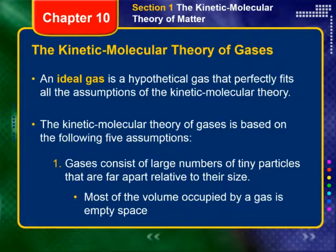The kinetic molecular theory of gases is based on five assumptions. An ideal gas is a hypothetical gas that doesn't exist in real life, one that perfectly fits all five assumptions of the kinetic molecular theory. You're going to have to know these five, and you'll be using them to explain why gases behave the way they do. Number one: gases consist of large numbers of tiny particles that are far away from each other relative to their size.